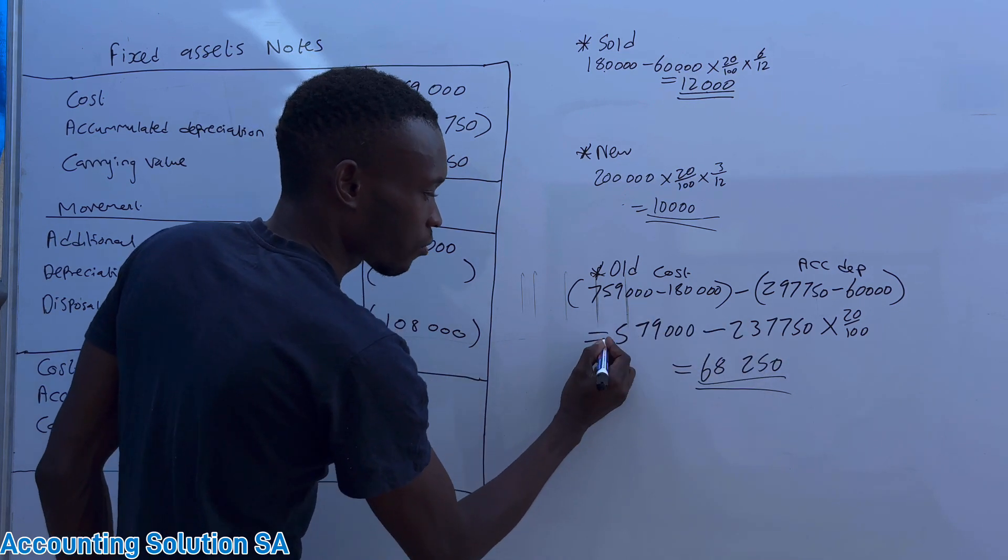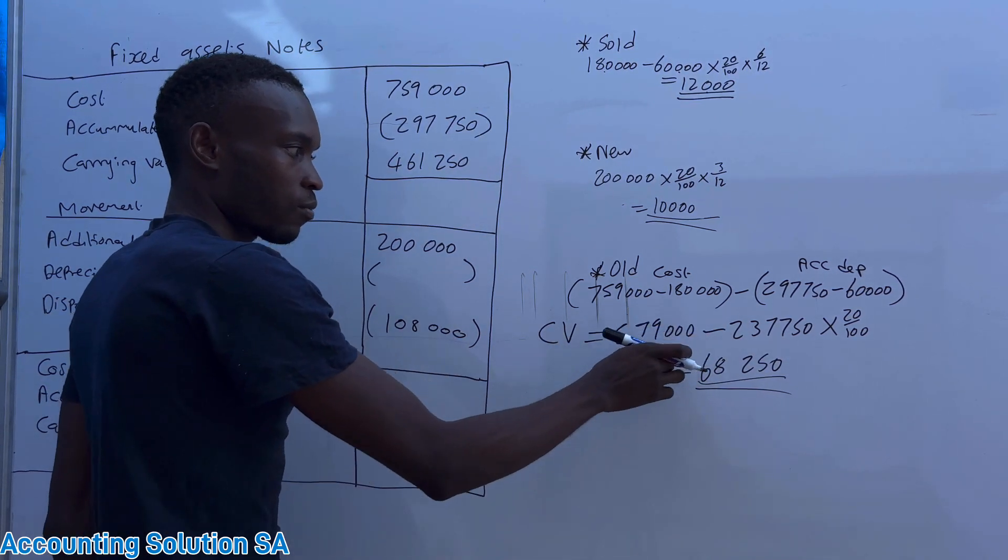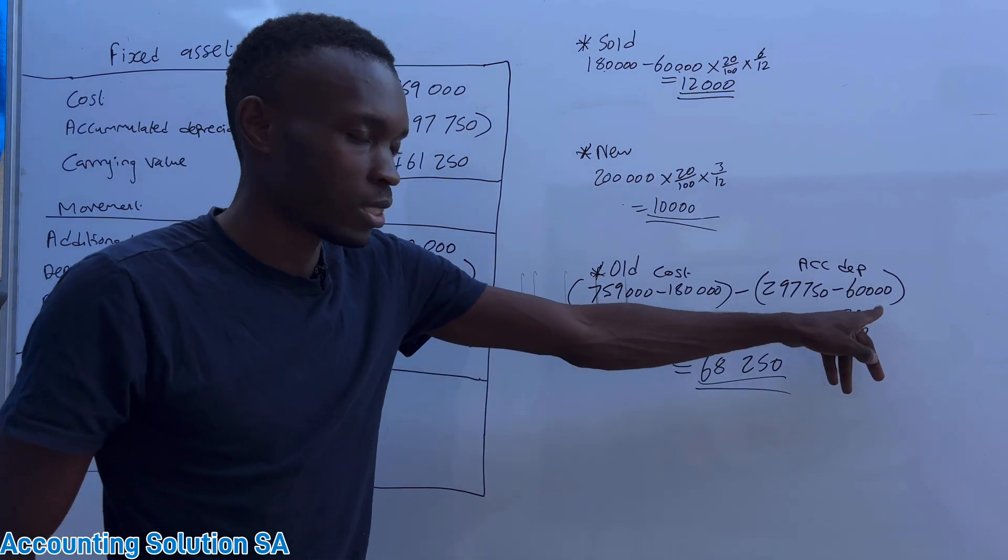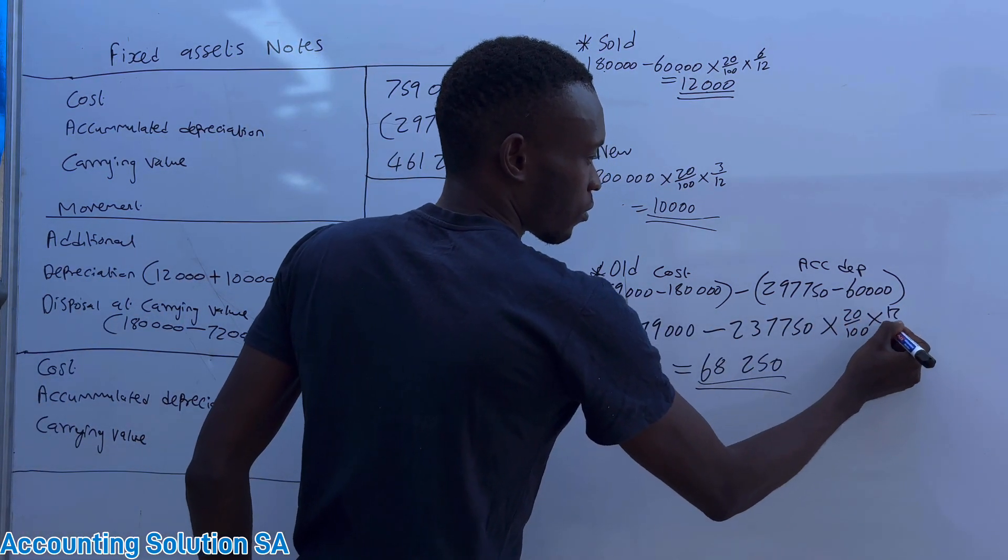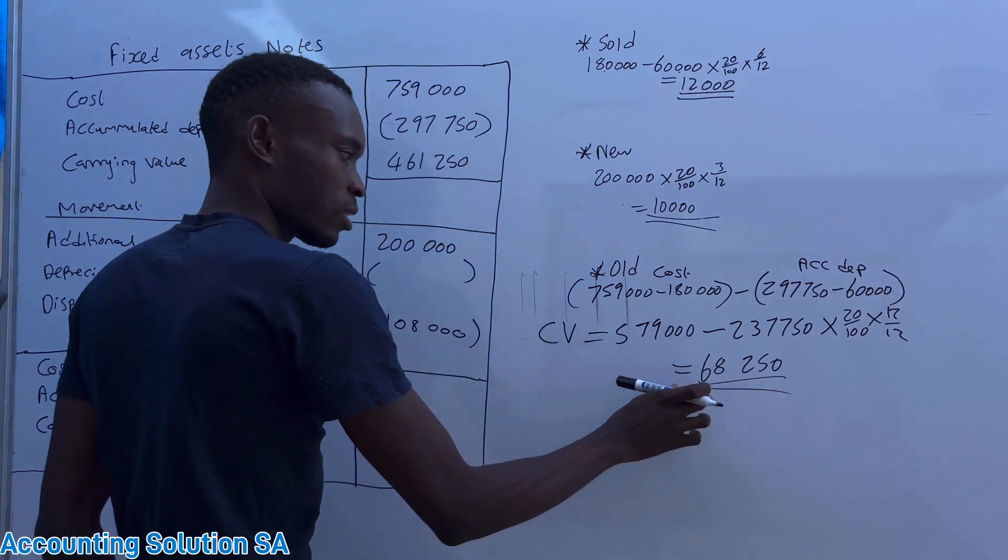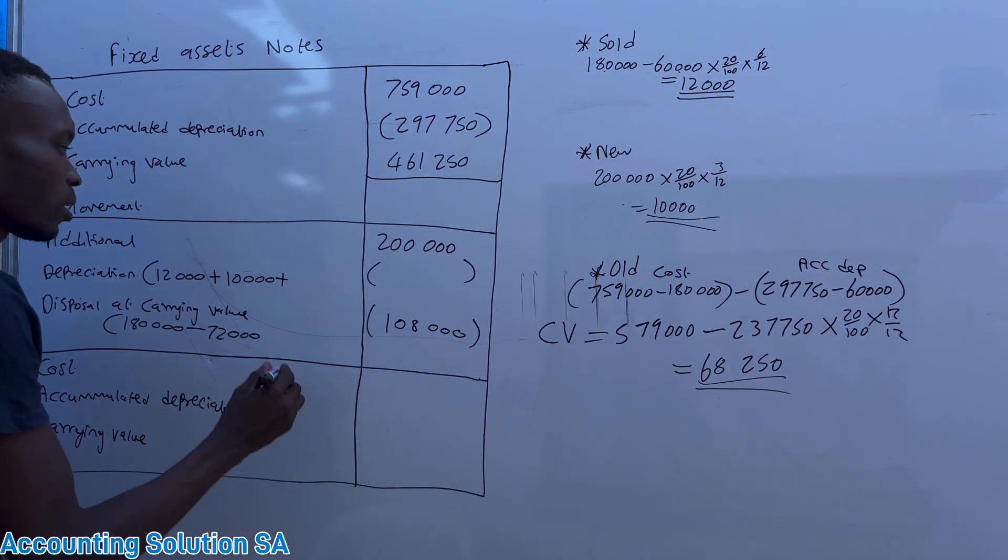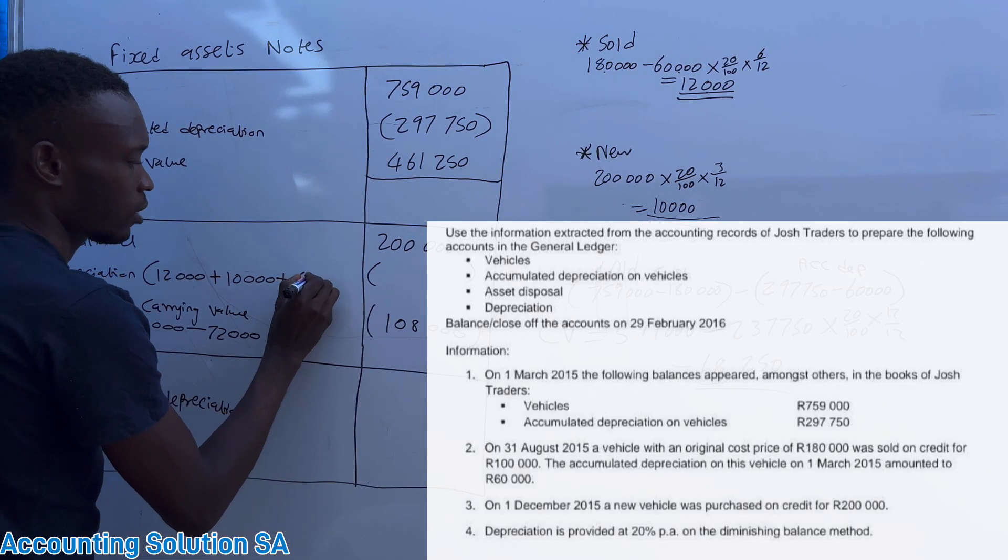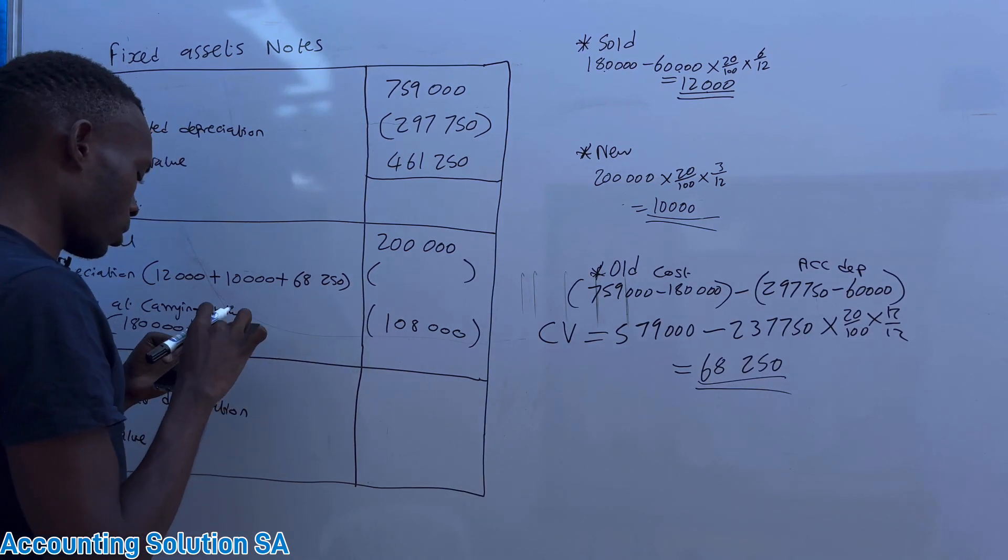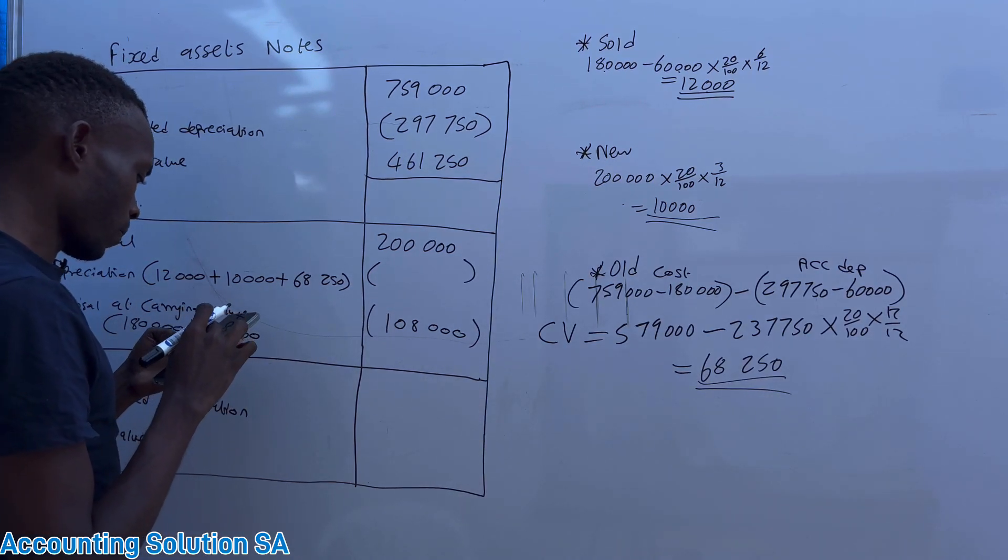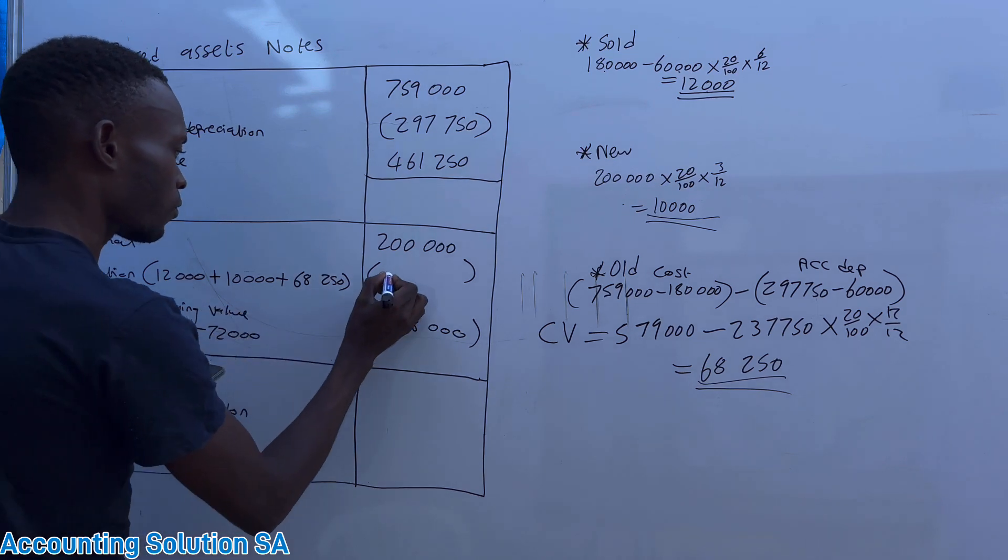After calculating current value, then we can say multiplied by 20%, and no need to count months because it's gonna be 12 over 12, and we get depreciation of 68,250, and after that it's gonna give you amount of 90,000.